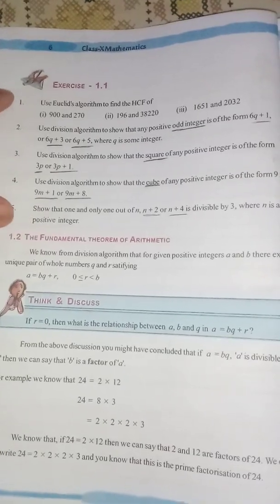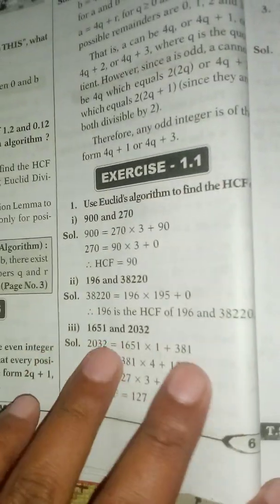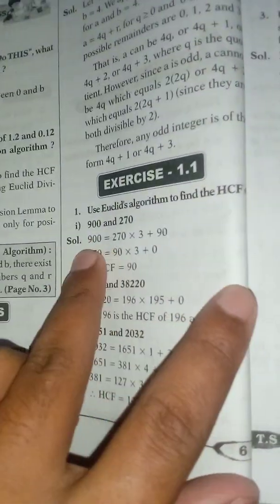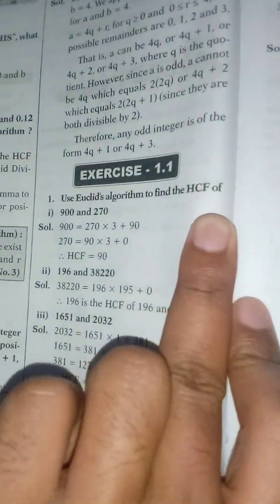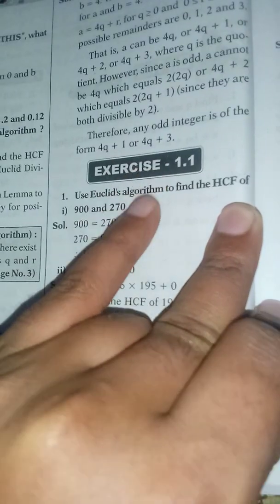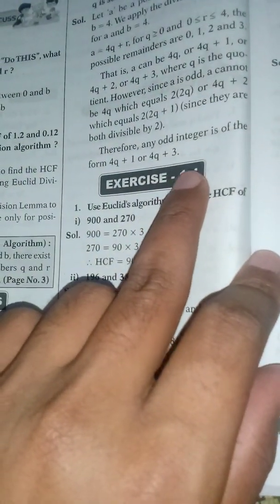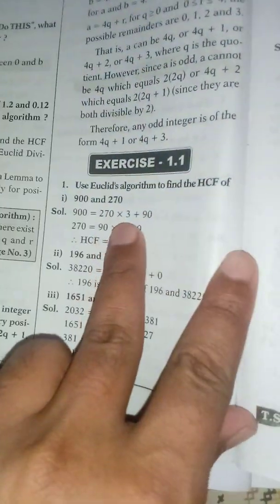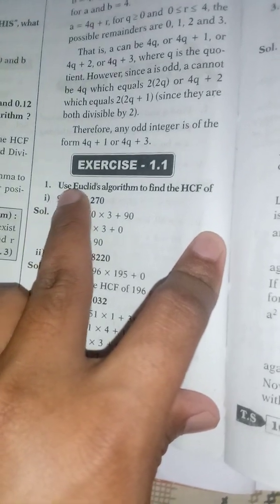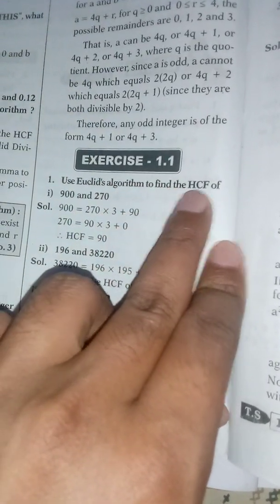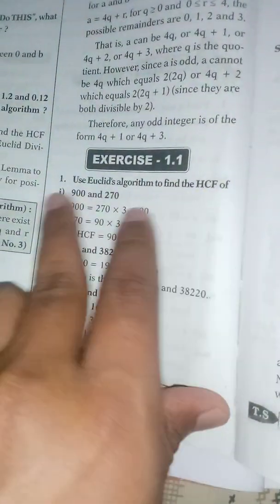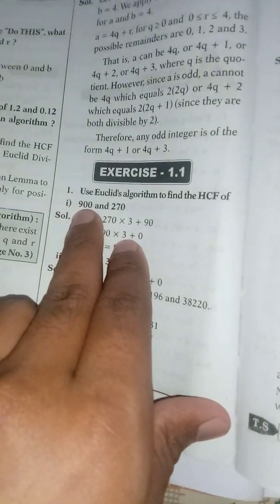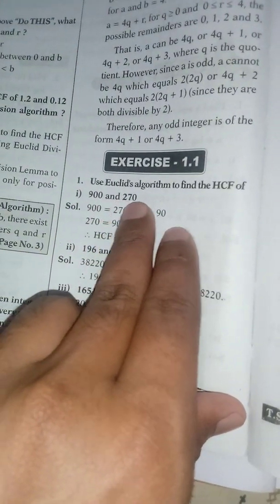So let's go. We are coming to the answers. It will be very easy here. Exercise 1.1 in this chapter Real Numbers. The first question is: Use Euclidean algorithm to find the HCF of 900 and 270.